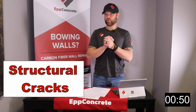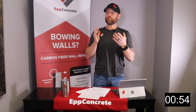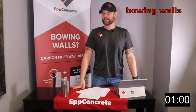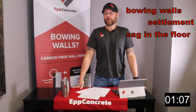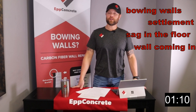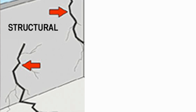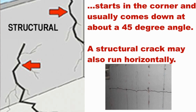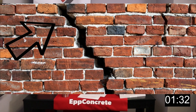Let's first talk about structural cracks. What is a structural crack? Typically a structural crack means that there is something going on with the home — you might have bowing basement walls, a little bit of settlement, or a lean or sag in a floor or a wall coming in. Typically a structural crack is going to start in the corner and come down at an angle, usually around a 45-degree angle, or it might run horizontally across the wall. Sometimes they'll be a little bit wider on the top than on the bottom, but not always.